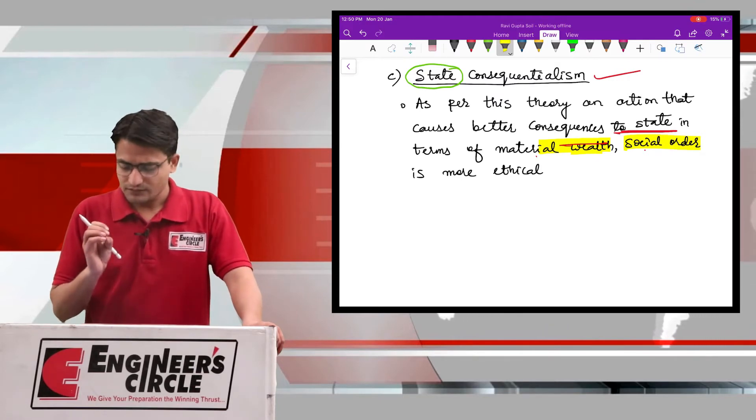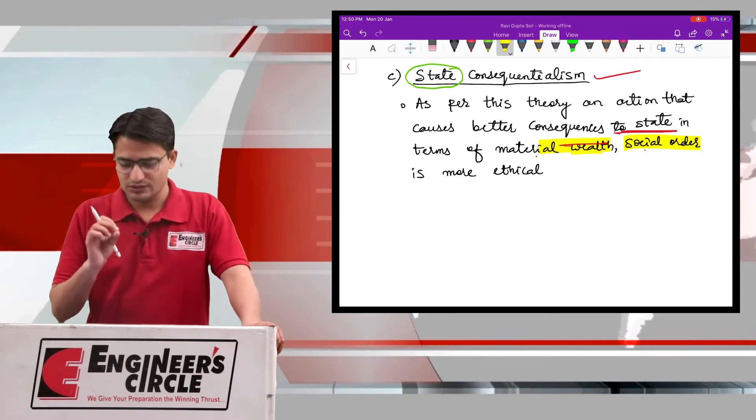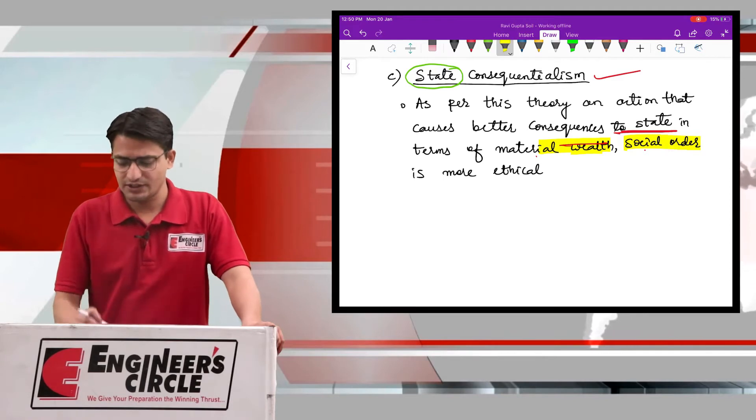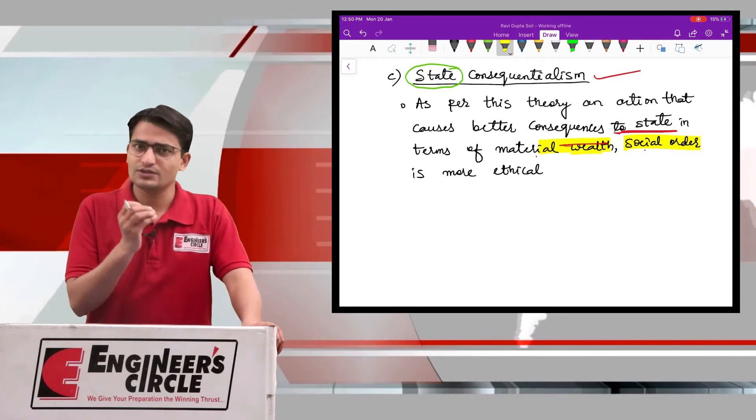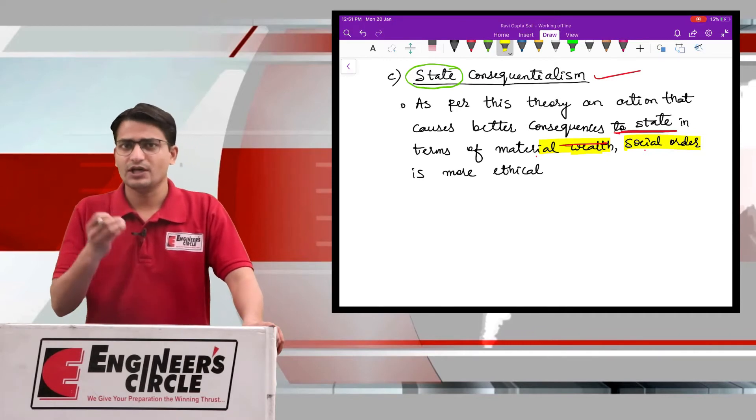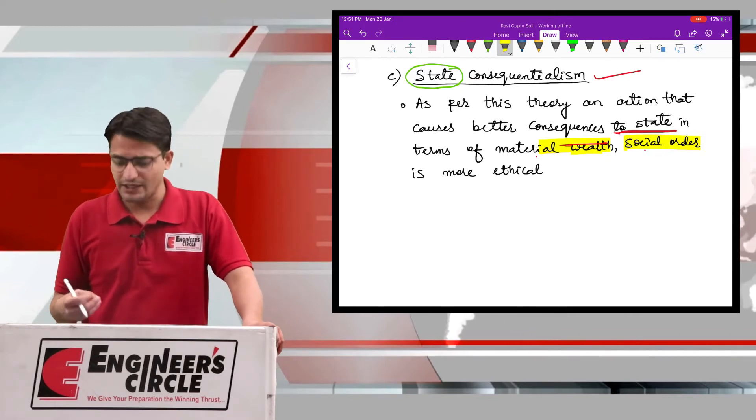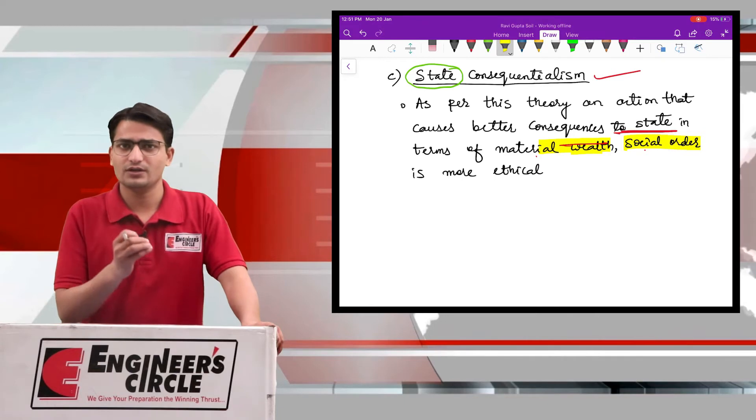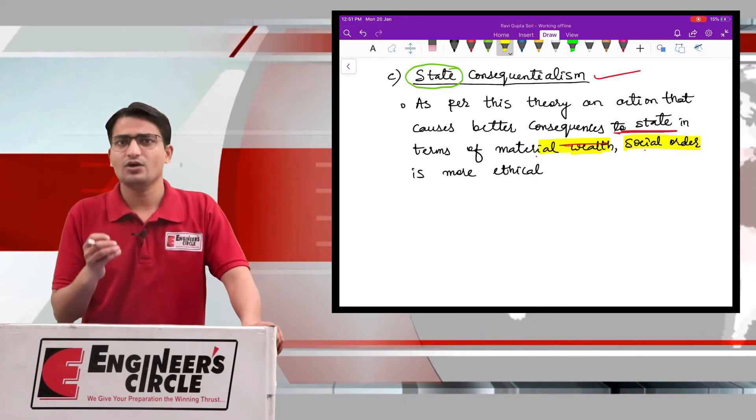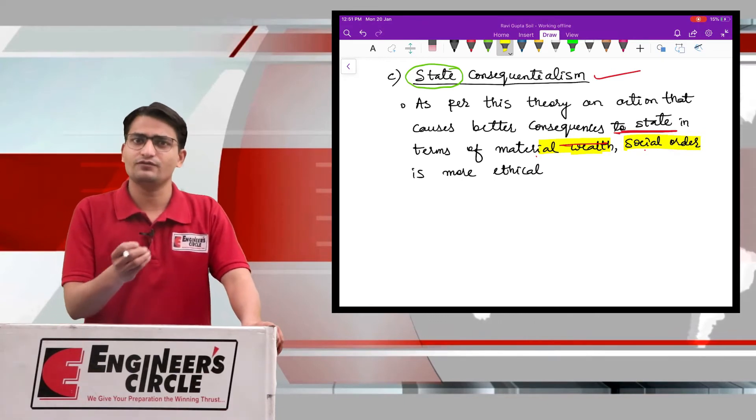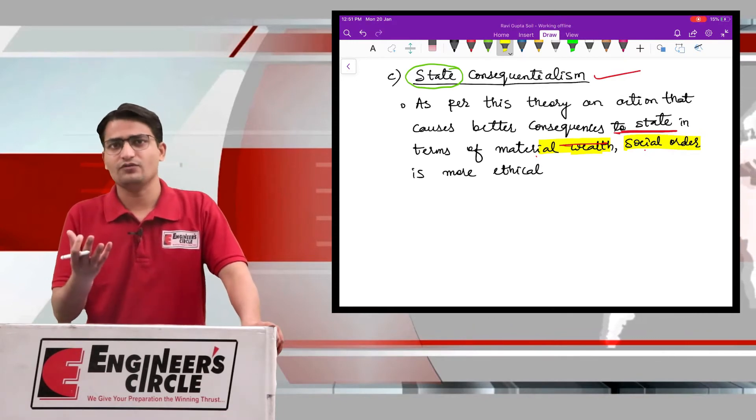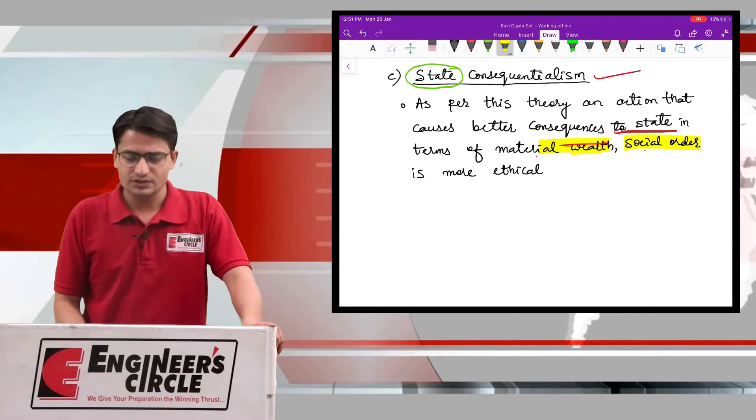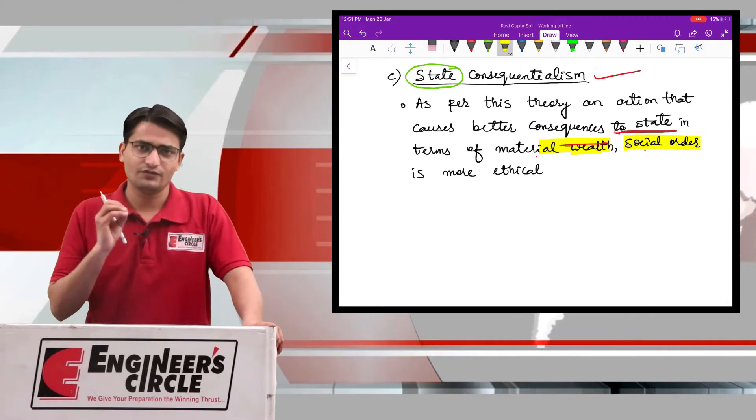This branch of ethics, that is state consequentialism, is one of the most important reasons every government gives behind its policies of any social order increasing or any policy of infrastructure increasing or banking reforms or public sector reforms and so on. This was the third branch of teleological.